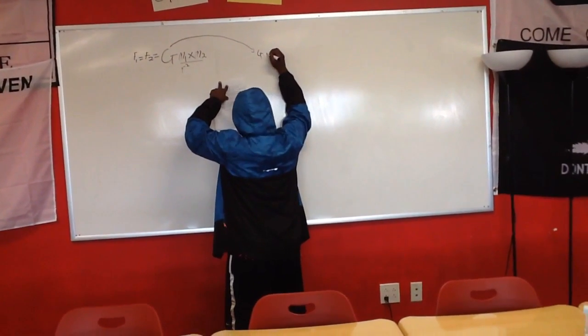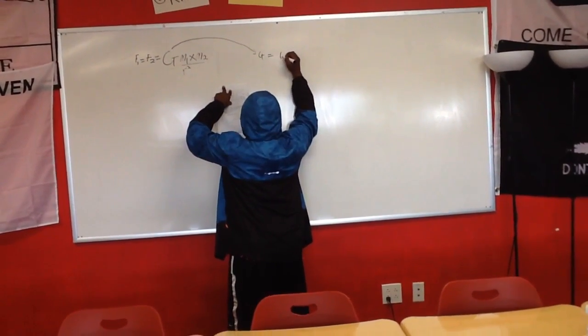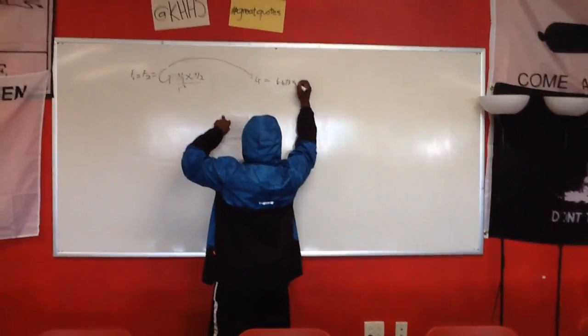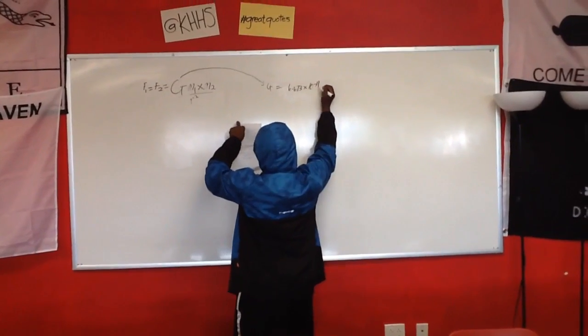G is equal to 6.673 times 10 to negative 11.